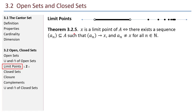A little bit more on limit points. Theorem: x is a limit point of set A if and only if there exists a sequence of a's in set A such that the sequence approaches x, and the terms of the sequence aren't x for all terms. 5 was a limit point in this set — our definition tells us it's a limit point because no matter how small the epsilon neighborhoods, they always contain some point in A. But the theorem says: another way to think about it is that 5 is a limit point because there exists a sequence of points in A where that sequence approaches 5.